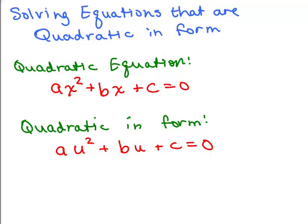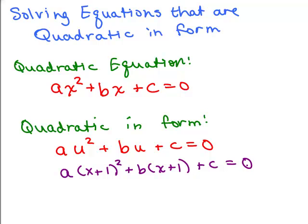For instance, you could have a times (x plus 1) squared plus b times (x plus 1) plus c equals 0. That's quadratic in form because instead of u and u squared, you have (x plus 1) and (x plus 1) squared. Or you might have something like a times m to the 4th plus b times m squared plus c equals 0, where instead of u and u squared you have m squared and m squared squared, which gives you m to the 4th.